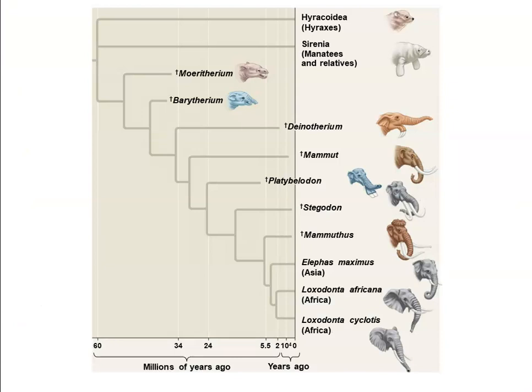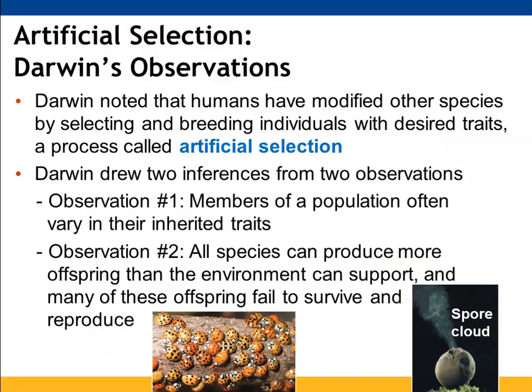We can look at a breakdown based on a timeline of similarities between organisms. Artificial selection is something Darwin first brought up — humans have made modifications by selecting and breeding individuals with desired traits rather than allowing things to occur naturally, and this causes change to occur more rapidly. In general, when you have members of a population, the traits they inherit will vary. More offspring are produced than the environment can support, so not all of them are able to survive and reproduce.